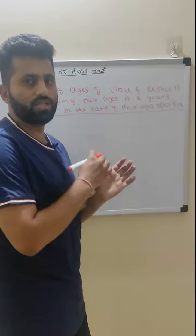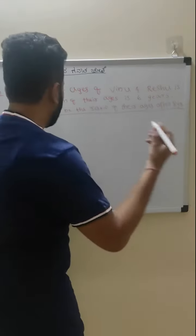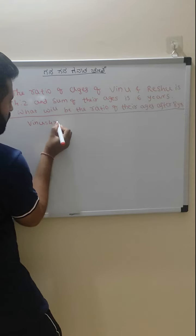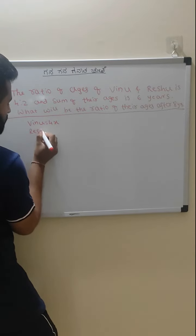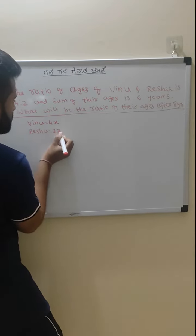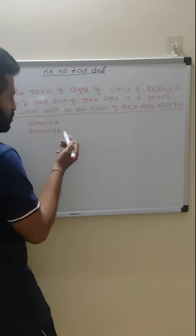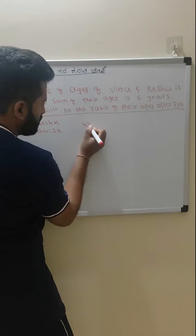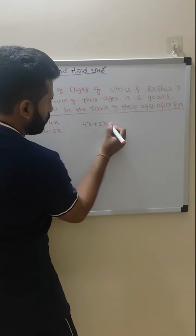Here we don't know their ages so let's assume their age as x. So, Vinu's age will be 4x and Rasu's age will be 2x because the ratio is 4 to 2. They have given sum of their ages is 6 years. That means 4x plus 2x is equal to 6.